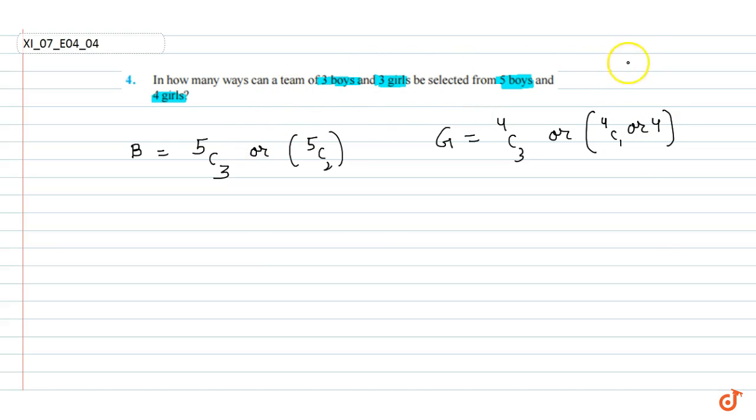So now we can find the total by multiplying the number of ways for boys times the number of ways for girls. So total is equal to 5C3 into 4C3.